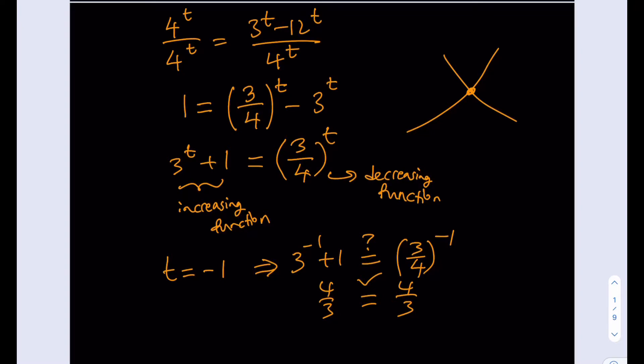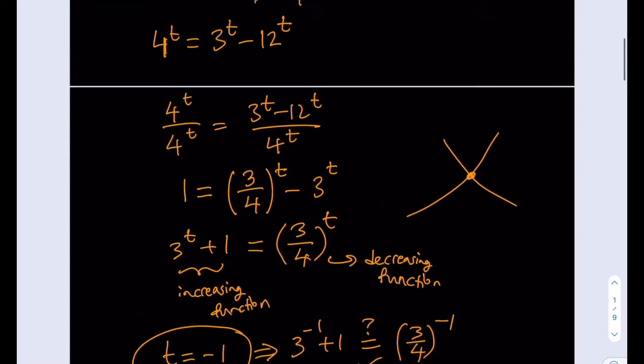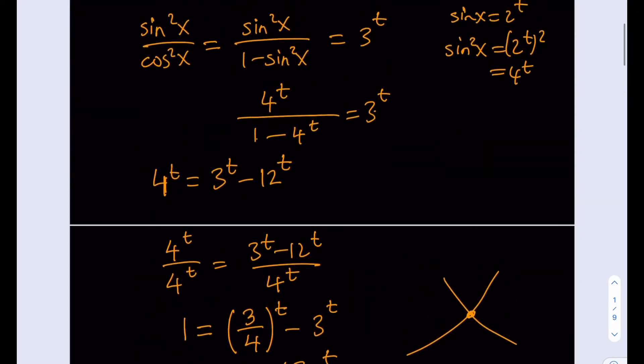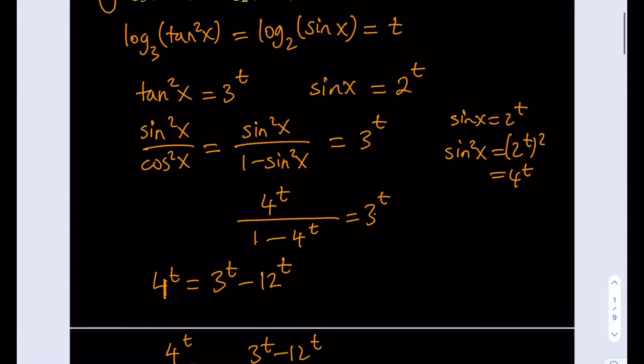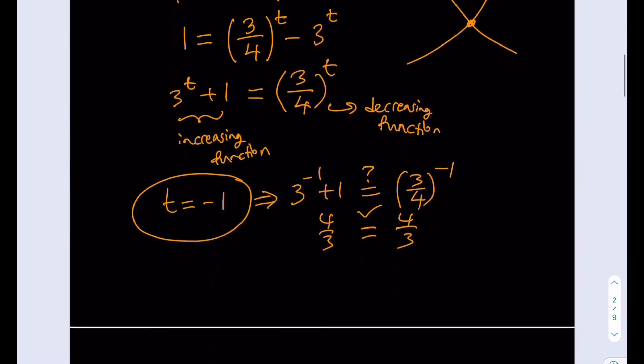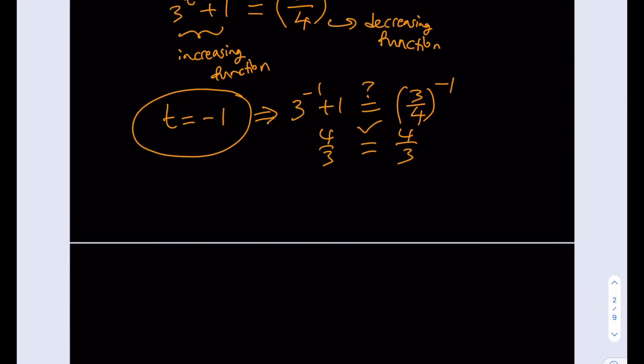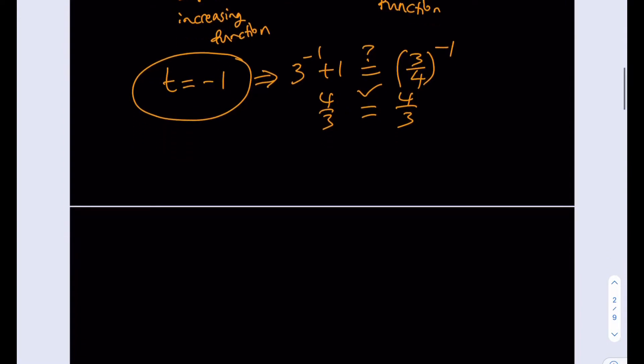Okay? So, t equals negative 1 is obviously a solution. So, let's go ahead and use that. How do we use that? Well, if you go back to our initial assumption that we said that sine x is equal to 2 to the power t, right?